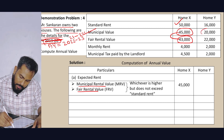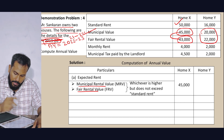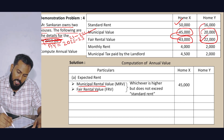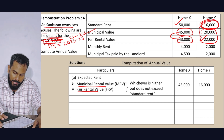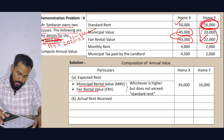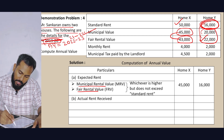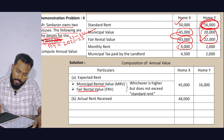For House Y: Municipal Value is 20,000 and Fair Rental Value is 22,000 — whichever is higher is 22,000. Expected Rental Value equals 22,000. Actual rent for House X is 4,000 per month × 12 = 48,000. For House Y, actual rent is 4,000 × 12 = 48,000 as well.